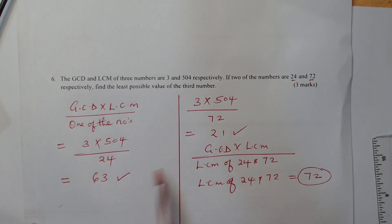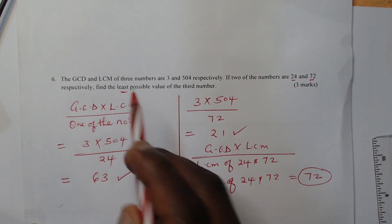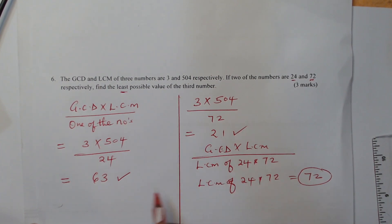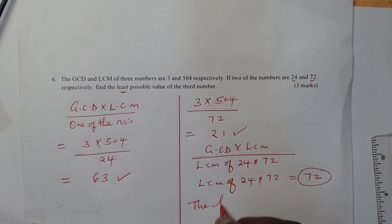Among these two possible values, we need the least or the smallest. The least number is therefore 21.